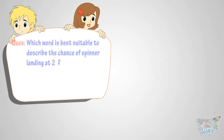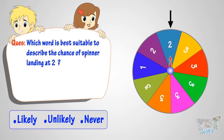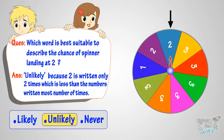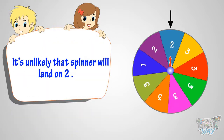Now, which word is best suitable to describe the chance of spinner landing at two? Likely, unlikely, or never? The answer is unlikely, because two is written only two times, which is less than the number written most number of times. So it's unlikely that the spinner will land on two.